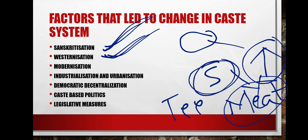Another factor is Westernization — many people imitate Western culture, making it harder to differentiate between lower and upper caste people. Modernization — the spread of scientific outlook and rationality — is also driving changes. Industrialization and urbanization have led to migration to cities, where caste rules are largely absent, people do not feel a sense of caste, and inter-caste marriages occur more freely.